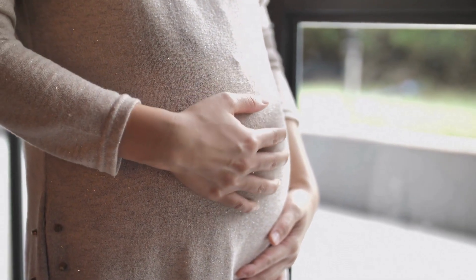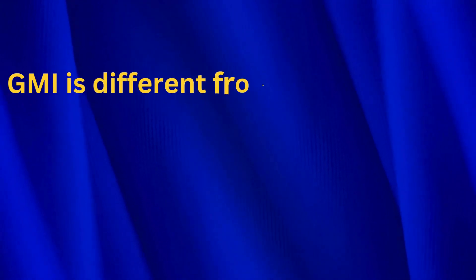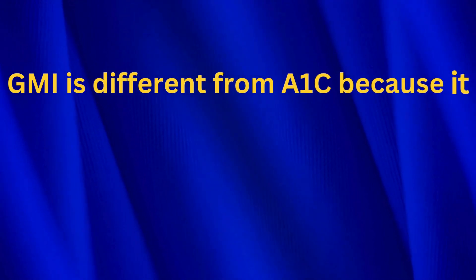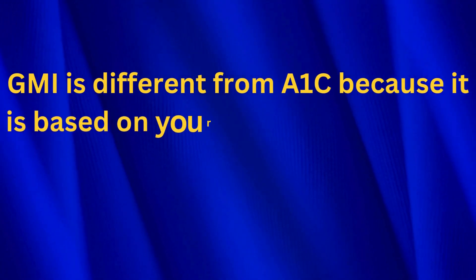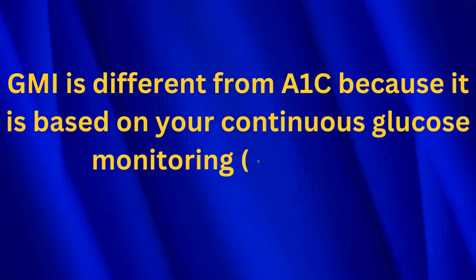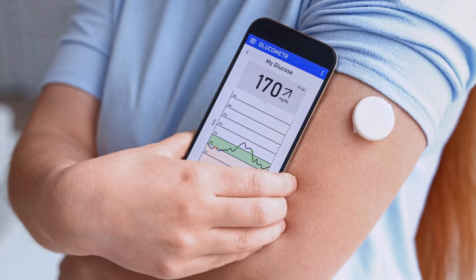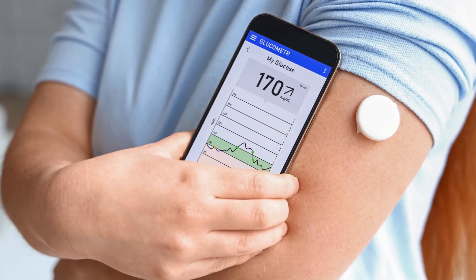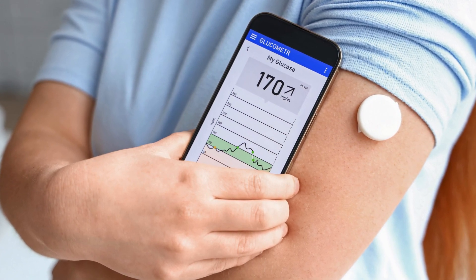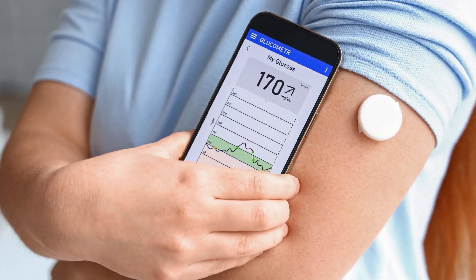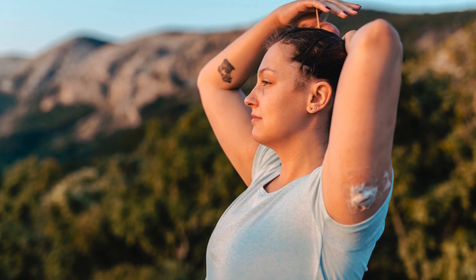GMI is different from A1c because it is based on your continuous glucose monitoring data. Continuous glucose monitoring is a device that measures your glucose levels every few minutes using a small sensor inserted under your skin.